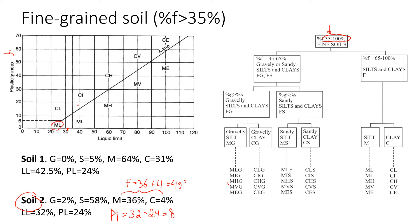Going back to the flowchart: we have fines from 35 to 100 percent. Since we have 40 percent fines, we go to the left branch, which covers fines from 35 to 65 percent. Next we go down and compare gravel versus sand content.